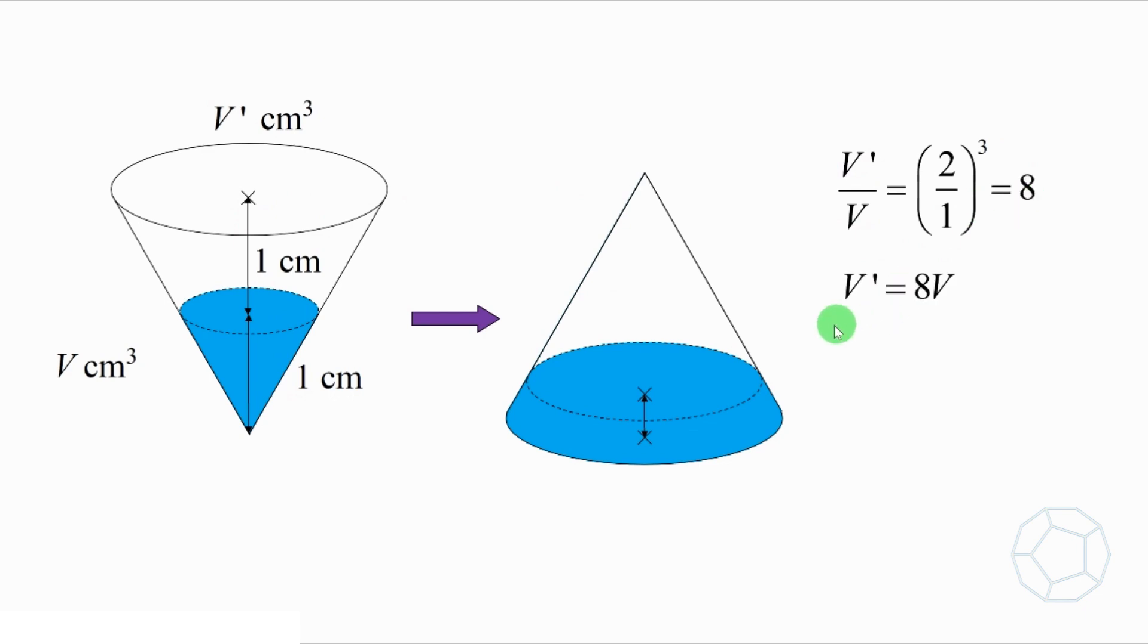So, V' is equal to 8V. In other words, the volume of the empty space here is 7V cm³.